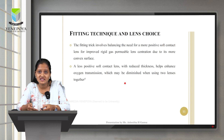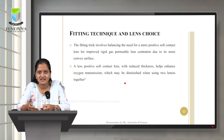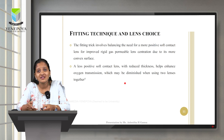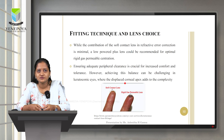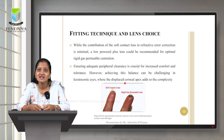A less positive contact lens with reduced thickness helps enhance oxygen transmission, which may be diminished when using two lenses together. However, a soft contact lens with positive power is preferred for better RGP fitting. While the contribution of the soft contact lens in refractive error correction is minimal, a low-powered plus lens is recommended for optimal RGP centration.